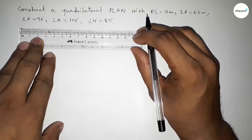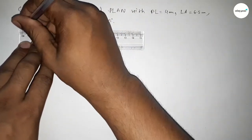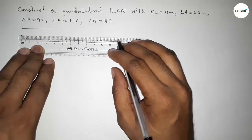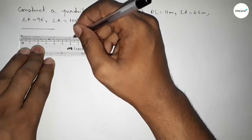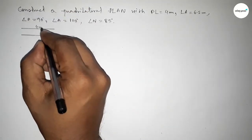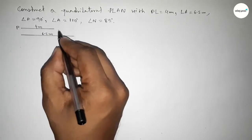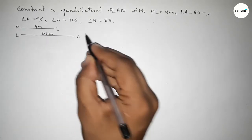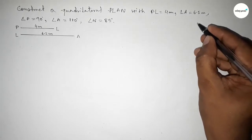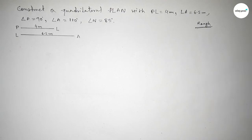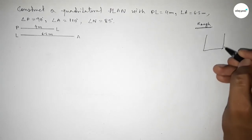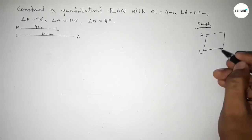First of all, we have to draw the given line of 4 centimeters — so this is 4 centimeters — and drawing another line of length 6.5 centimeters. So this is 6.5. This one is PL at 4 centimeters and this is LA at 6.5 centimeters.